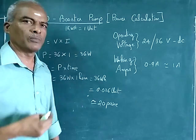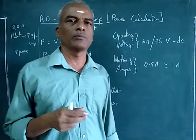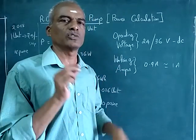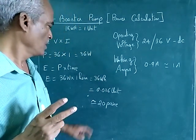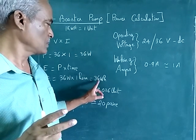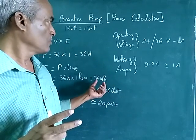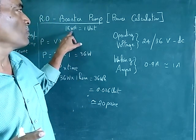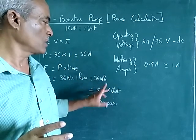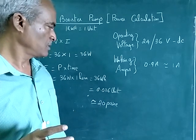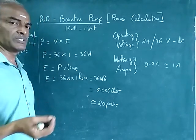In that case, one hour times 36 watts equals 36 watt-hours. We already know 1000 watt-hours equals one unit. Therefore, 36 watt-hours equals 0.036 units.